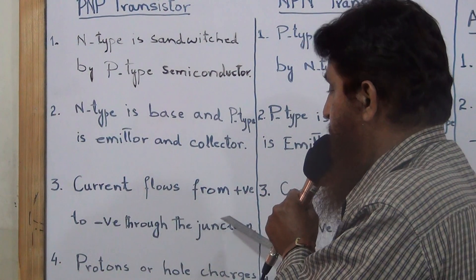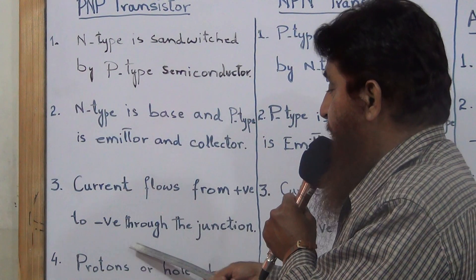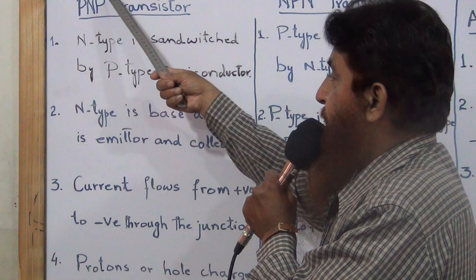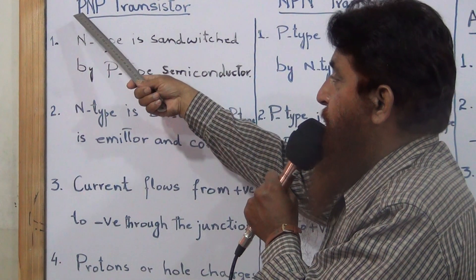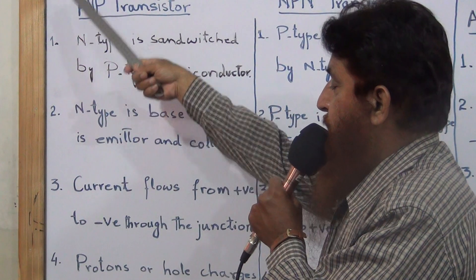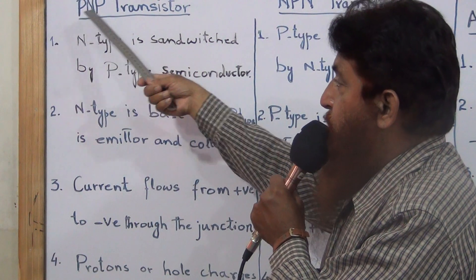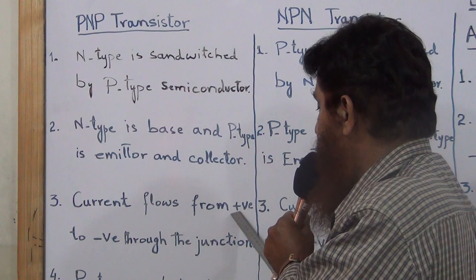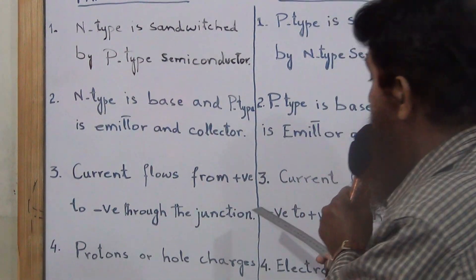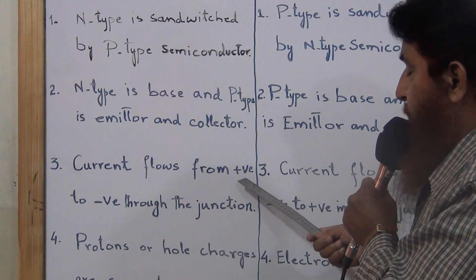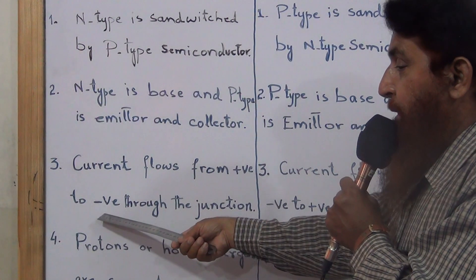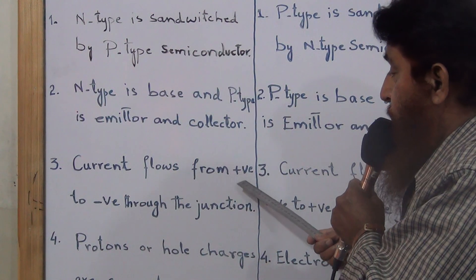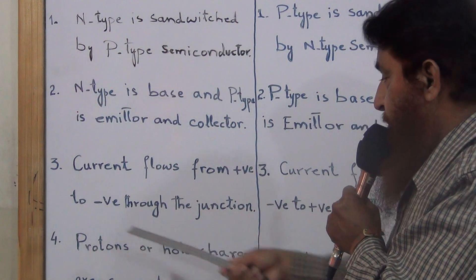Current flows from positive to negative through the junction. In PNP transistor, current flows due to hole charges, meaning protons flow towards the electrons. Therefore, current flows from positive to negative, because protons carry positive charge and electrons carry negative charge.